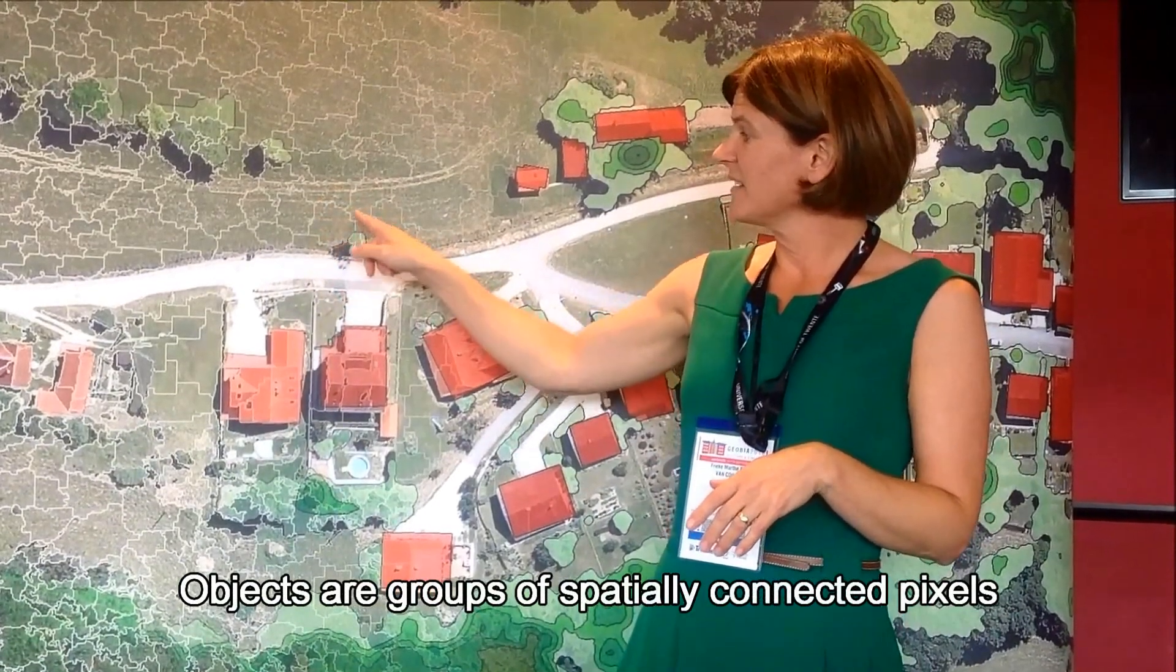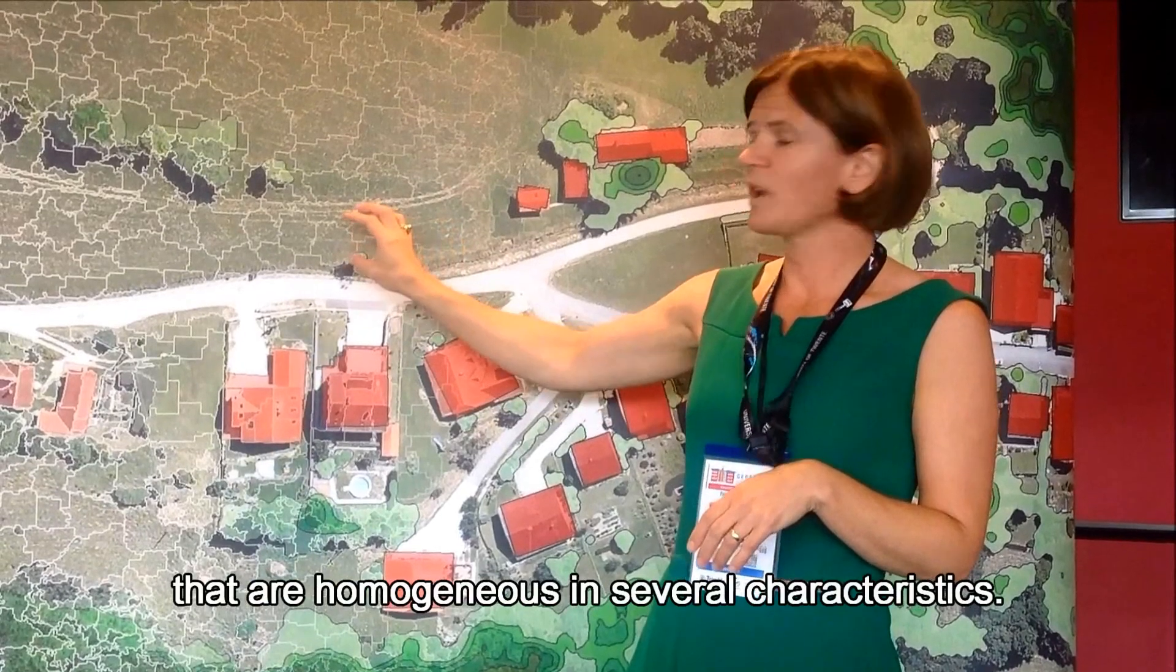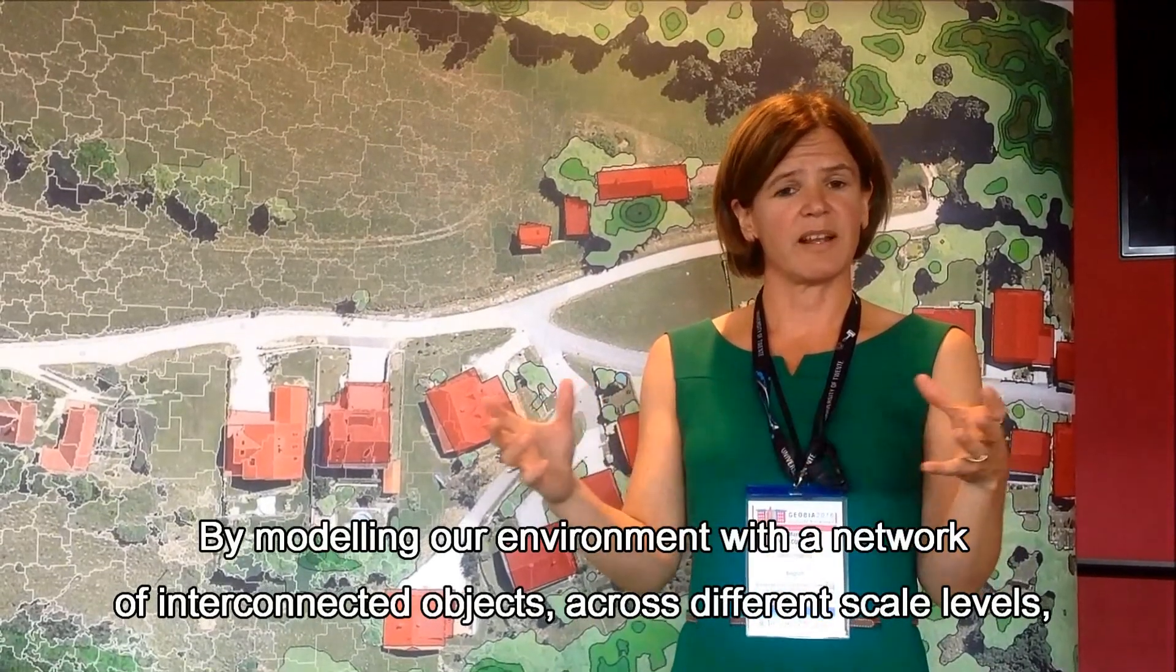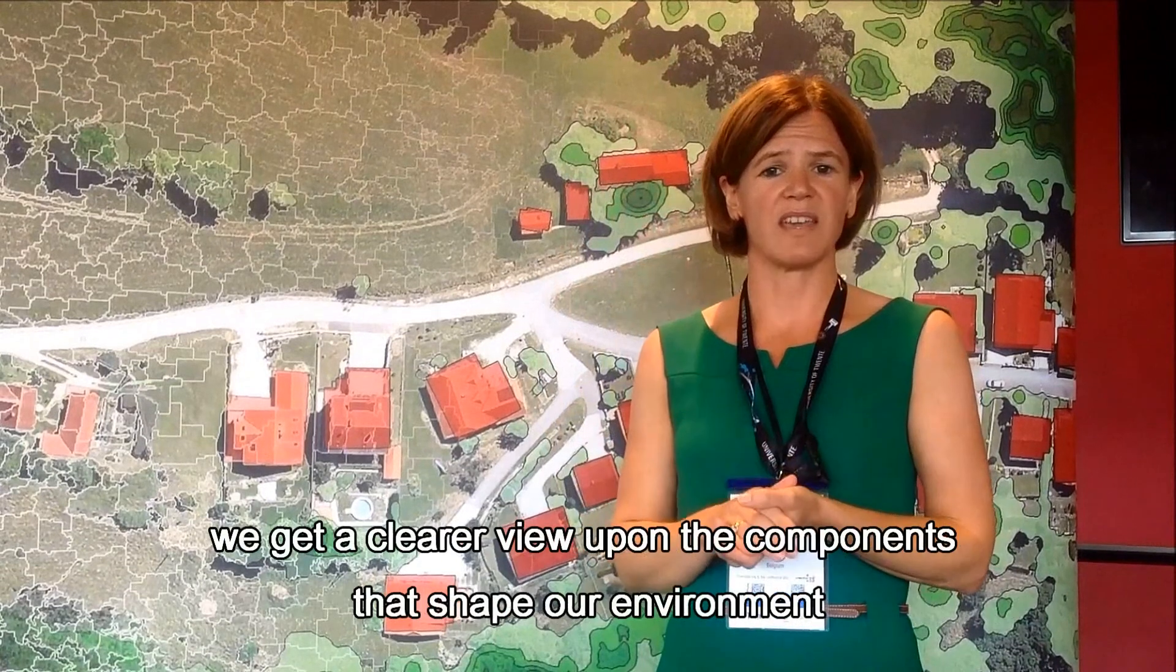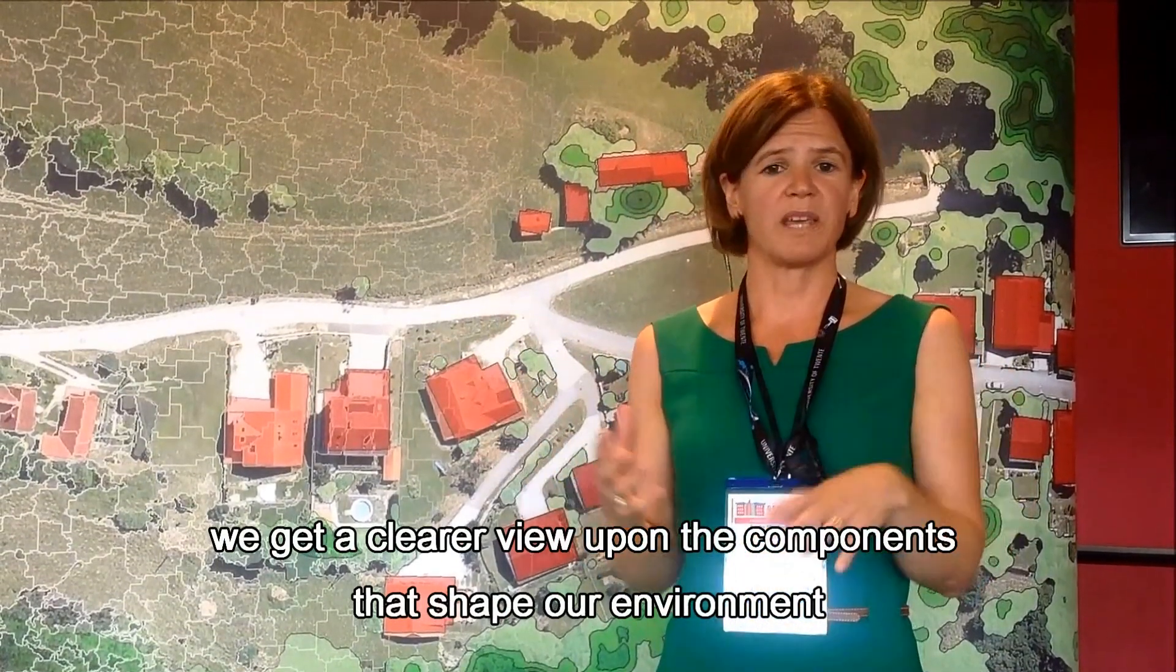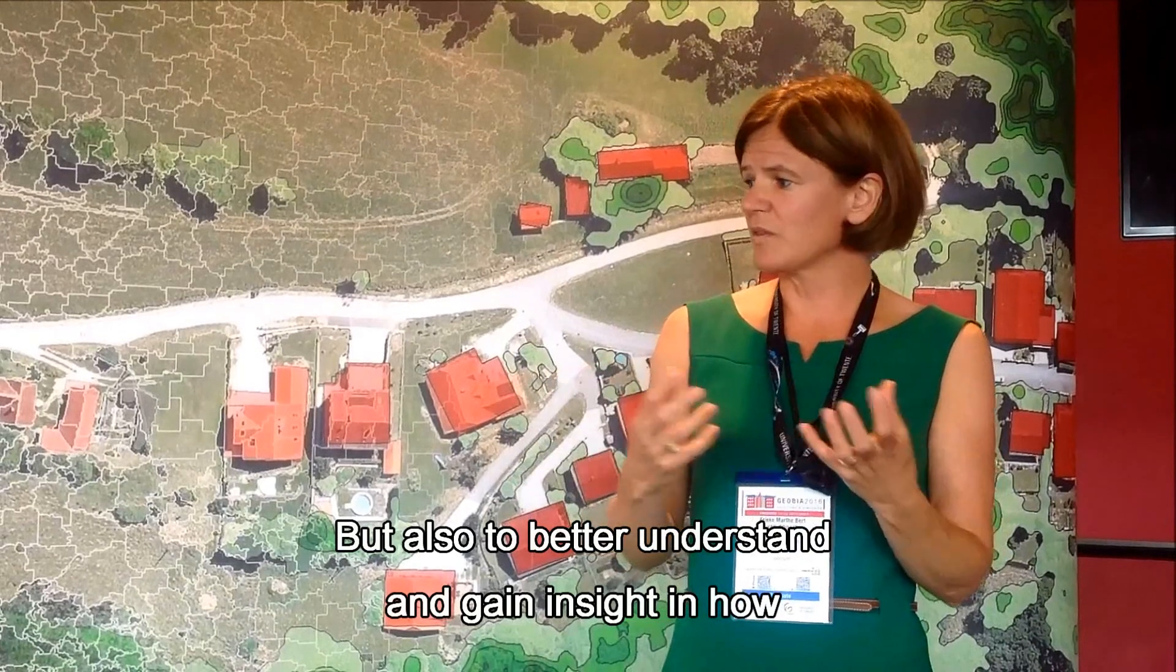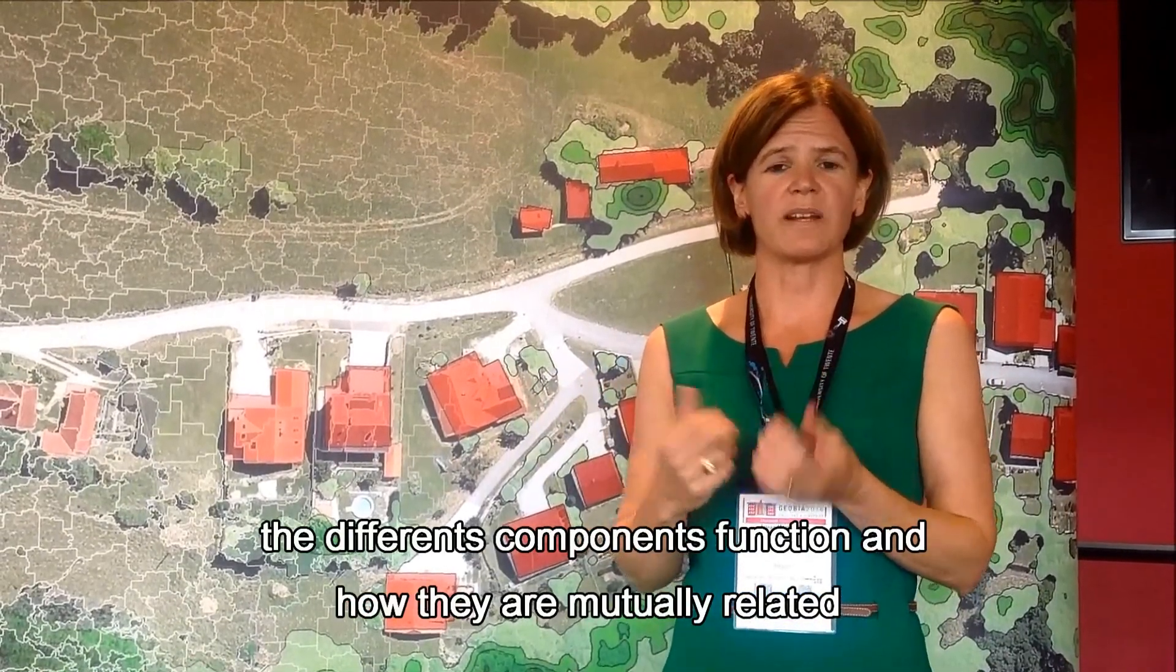Objects are actually groups of pixels, connected pixels, which are homogeneous in a number of characteristics. And by modeling our environment with a network of each other over different scale levels, we are able to better model our landscape, our environment, but also to understand and get insight into how the different components are functioning and how they relate to each other.